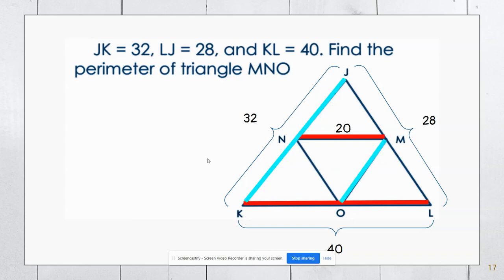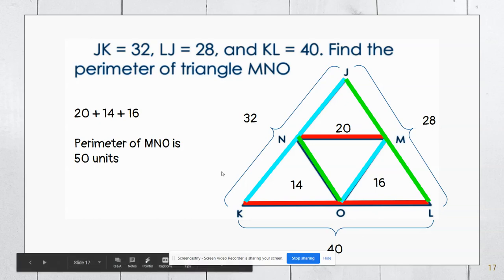I'm going to do the same thing with 32. Dividing that in half gives me 16. And then for side 28, dividing that in half will give me 14. So adding 14, 20, and 16 will give me a perimeter of 50. Now, again, I could also add up the outside. So 32, 28, and 40 would give me 100. Dividing that by 2 would give me 50 units.